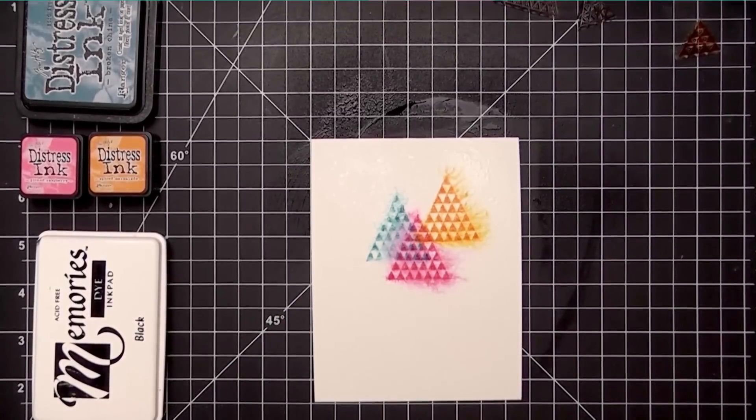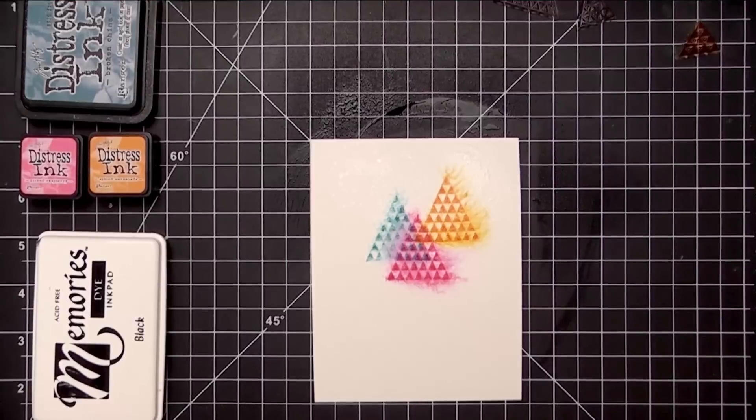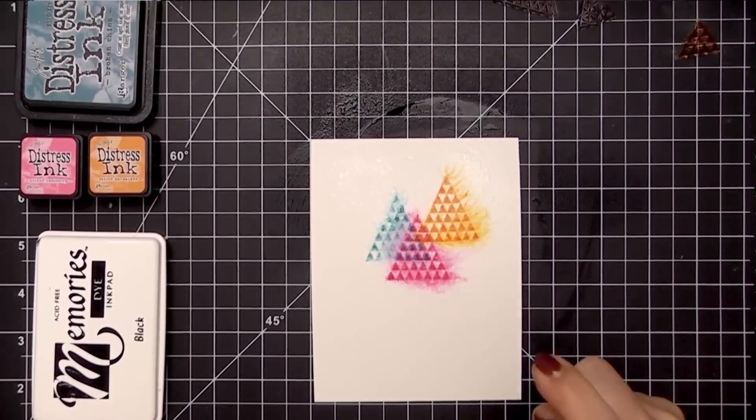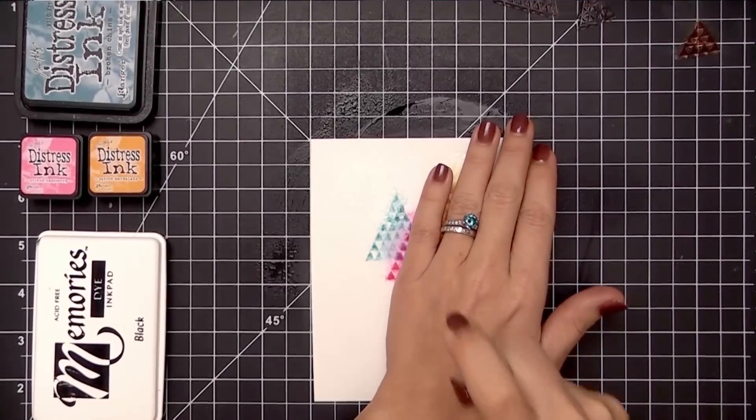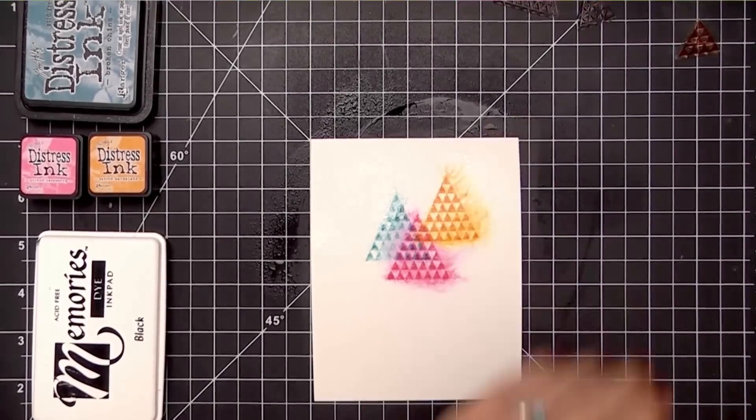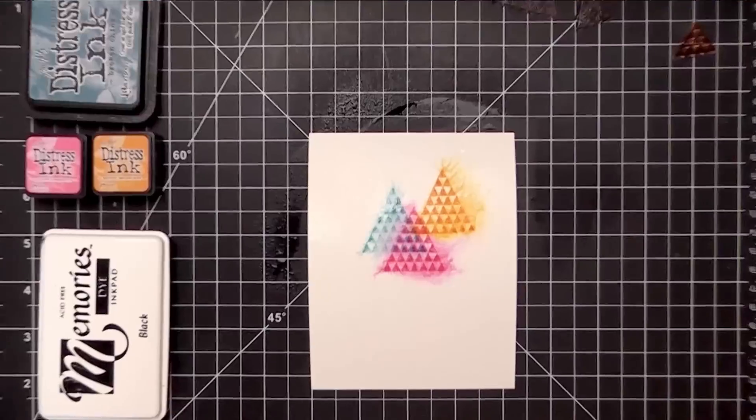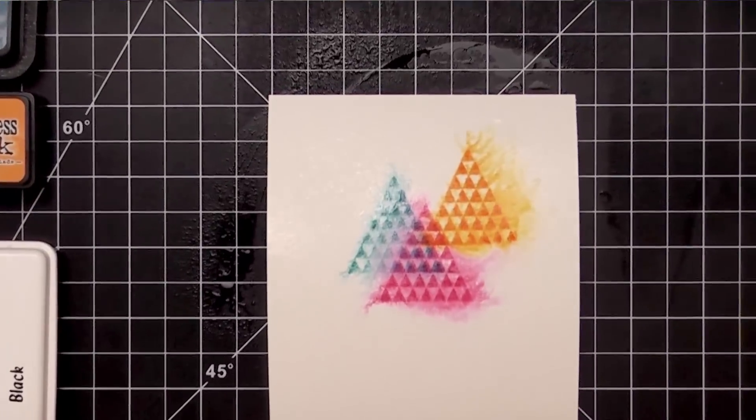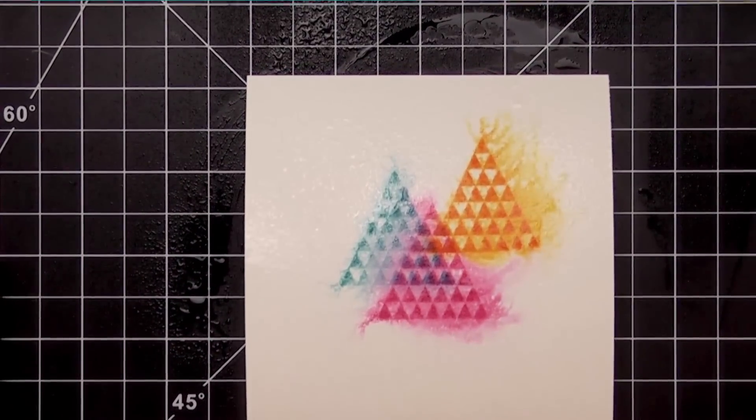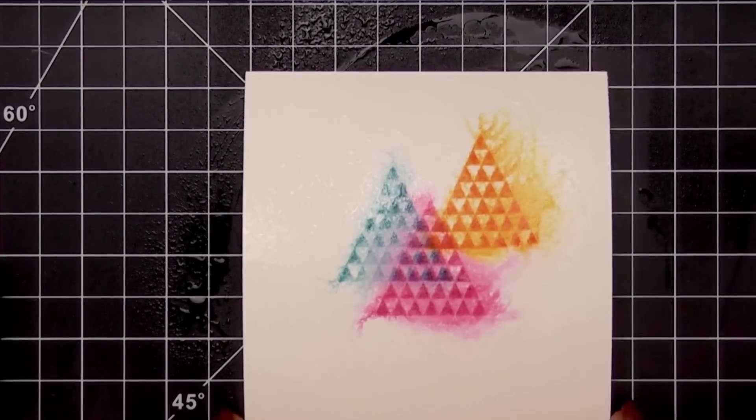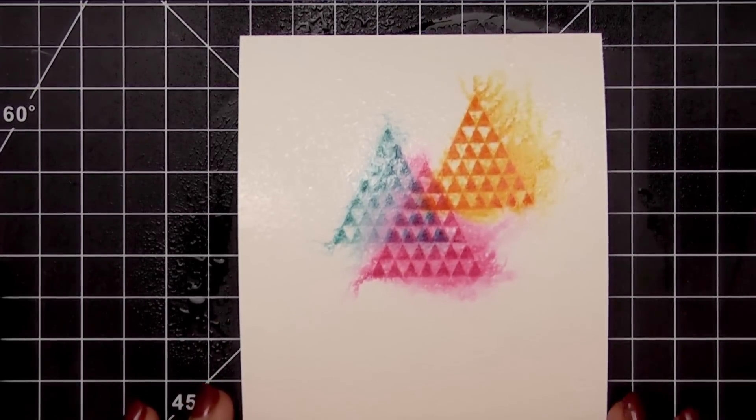You'll get more water on your paper and you will push the ink out further because the water is coming out with more force. The further away and the higher you get, the less water you're going to get onto the paper and the more fine mist it's going to create. All we have to do is let this dry.